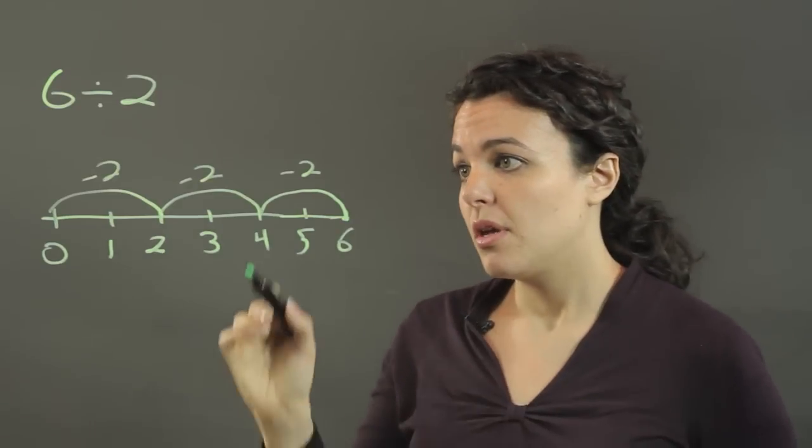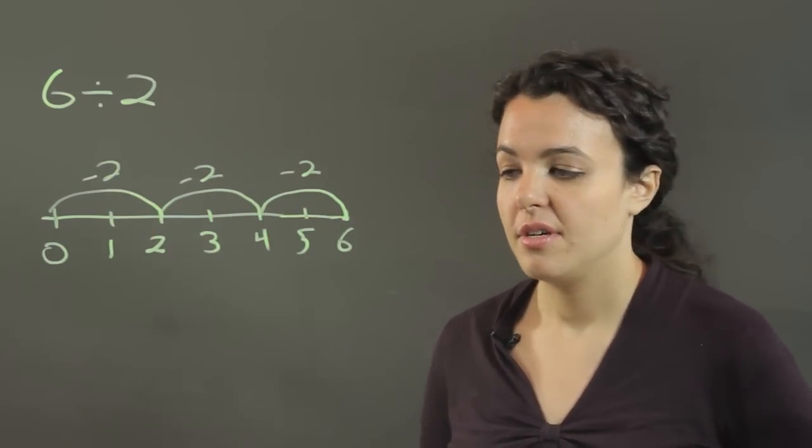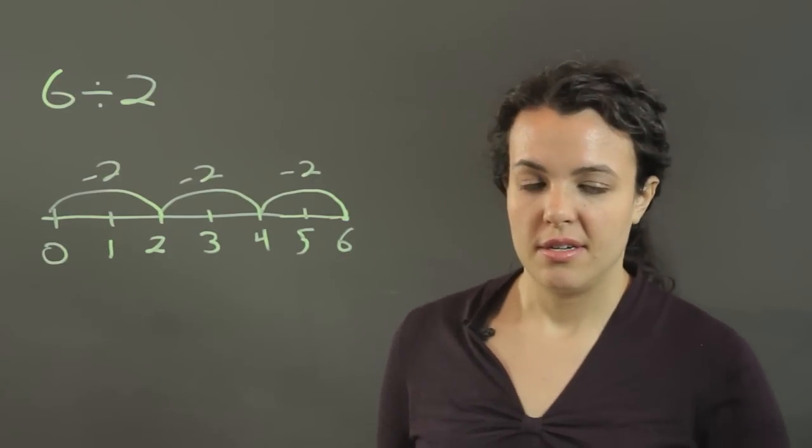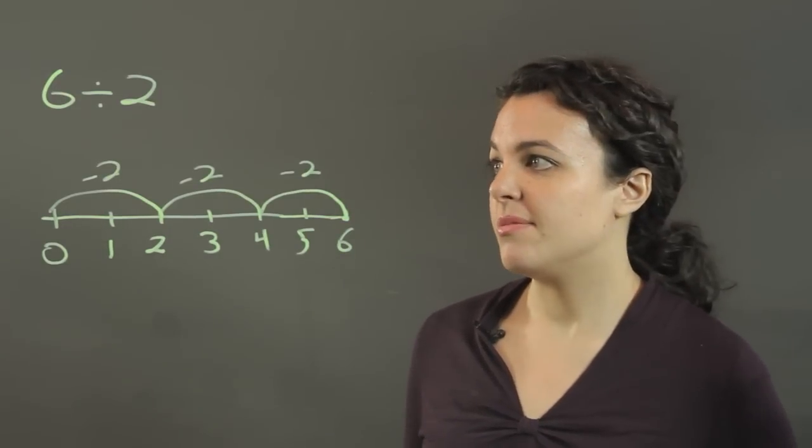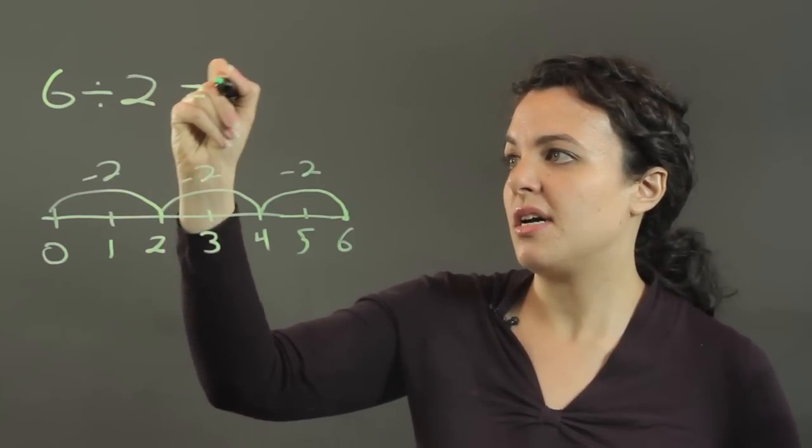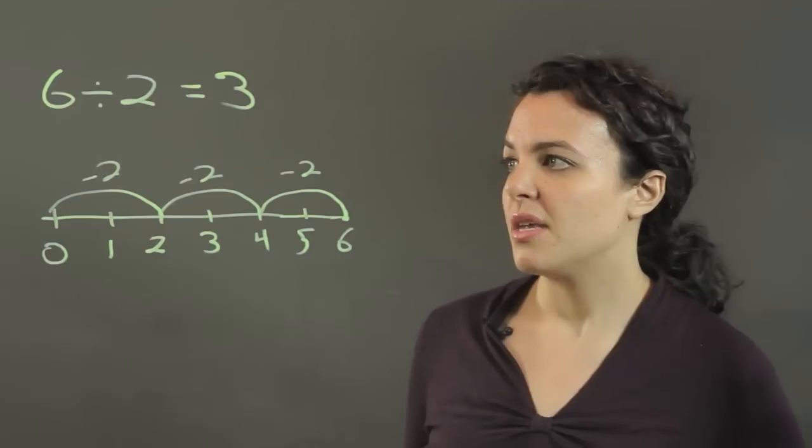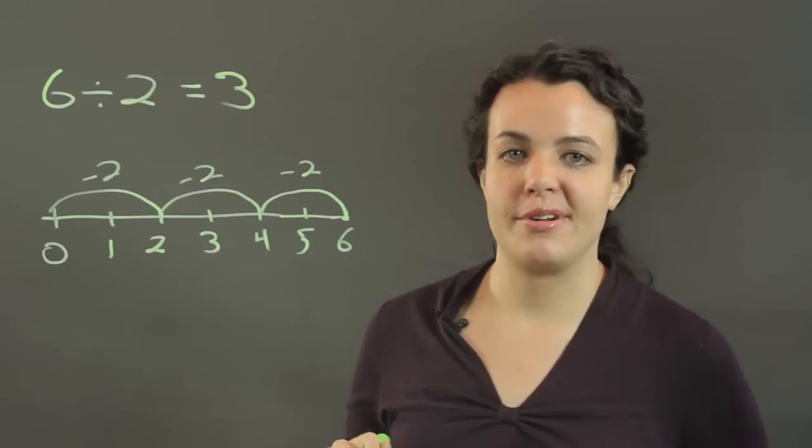So we subtracted 2 three times. So 6 and you take away 2 three times is the same as 6 divided by 2 giving us 3. Because think about it, division is asking you how many times does this number fit into that one?